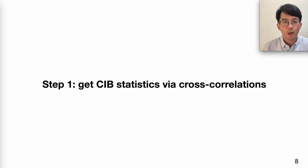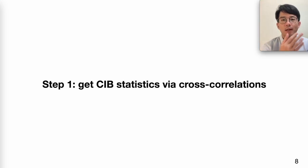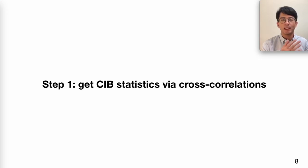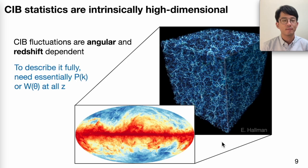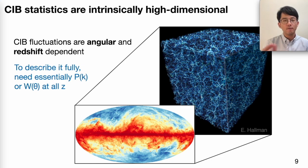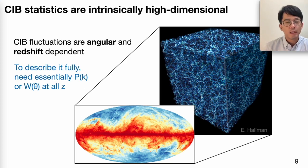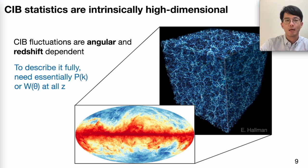This new method of component separation takes a two-step process. The first step is to understand the CIB on the statistical level. Because in SFD the Milky Way foreground galactic dust is still much stronger than the CIB, to understand CIB statistics we need to rely on cross-correlations. The intrinsic CIB statistics is extremely high-dimensional because the universe is redshift-evolving and spatially dependent. To fully describe the CIB, we essentially need the P(k) or W(θ), the angular correlation function, at all redshifts that the CIB contributes significantly to, for example, the 100-micron data that goes into SFD.